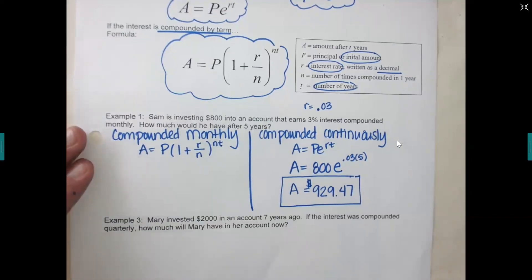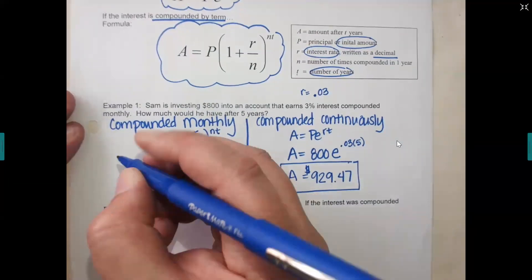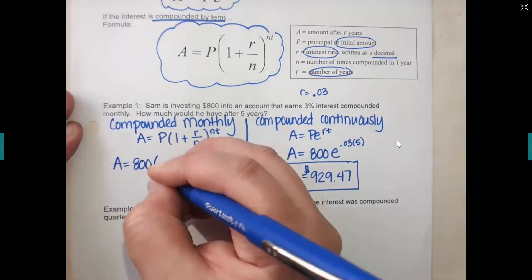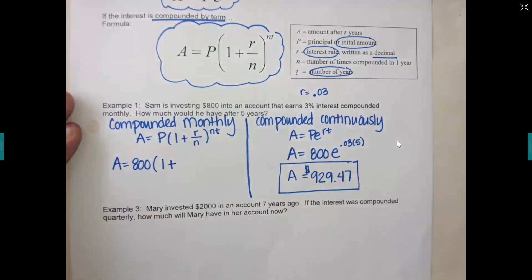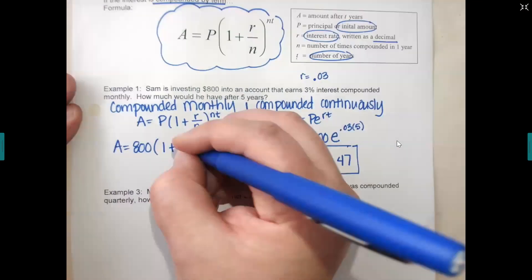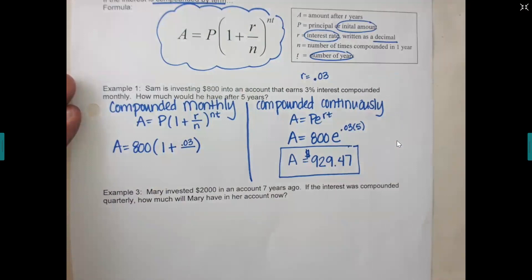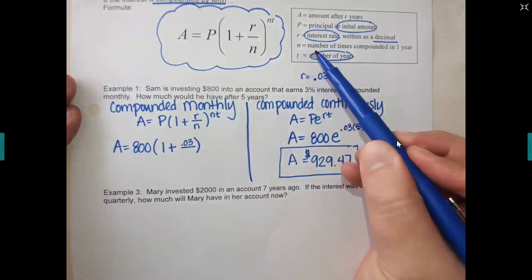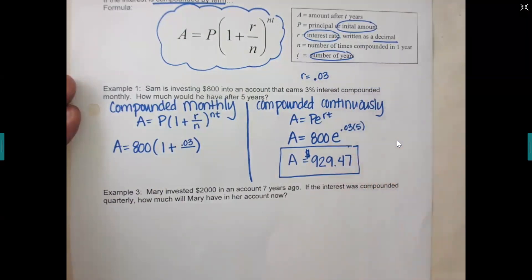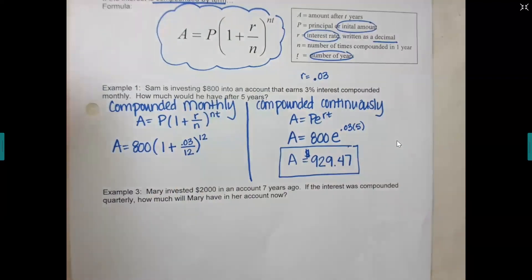So if it's compounded monthly, instead of using the top formula, you're going to use this formula right here. So it's going to be A equals P times one plus R over N up to the NT. All of the letters, though, stand for the same thing. P is still the starting amount. How much does Sam still have? $800 to put down. One plus. My R is still my interest rate, written as a decimal. So what will my R still be? 0.03. But then on bottom, you have a divide by N. So look back in the box. N is the number of times it's going to be compounded in one year. So if it's monthly, how many times would that be? 12.